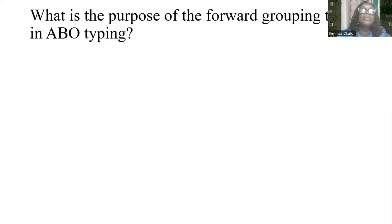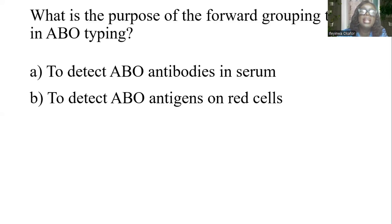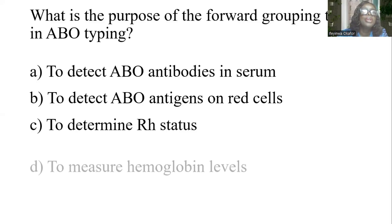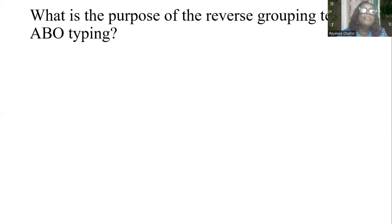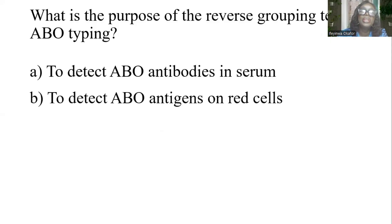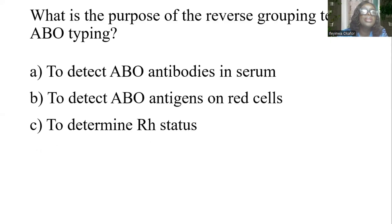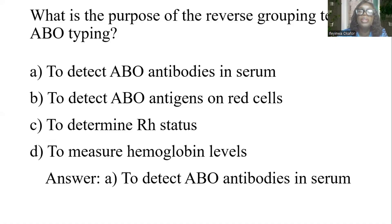What is the purpose of the forward grouping test in ABO typing? A) To detect ABO antibodies in serum. B) To detect ABO antigens on the red cells. C) To determine Rh status. D) To measure hemoglobin level. The answer is B: to detect ABO antigens on the red cells. The purpose of the reverse grouping test is to detect ABO antibodies in serum.